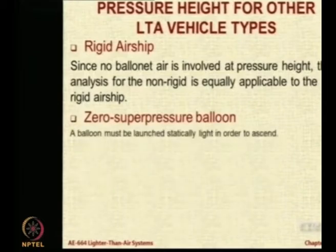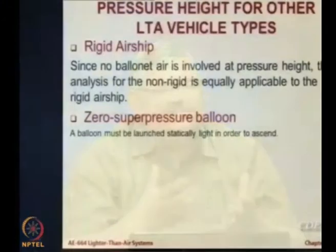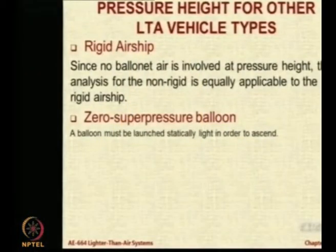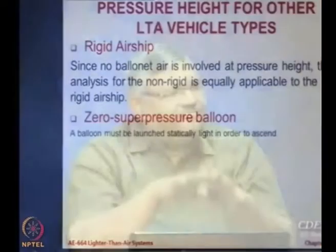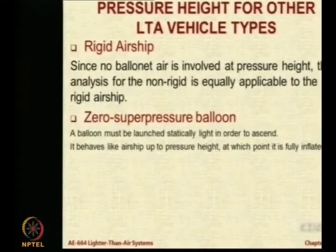Now, if you look at a zero super pressure balloon — that means a balloon which is having a pressure inside just equal to atmosphere — this is called a zero super pressure balloon. If this balloon has to go up, it cannot have no buoyancy; it has to be statically light. So it has to contain a volume more than that which gives lift equal to weight, meaning the buoyant lift will be more than the weight, which is why it will go up. Up to a pressure height it behaves like an airship, at which point it is fully inflated.